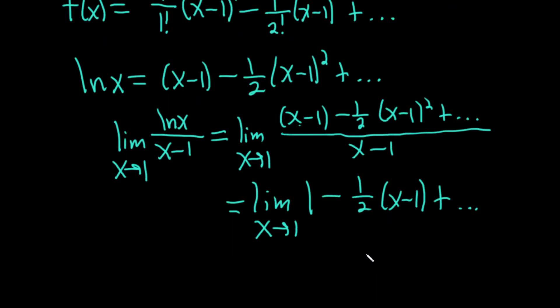So everything is going to be 0. You're just going to get 1. This is 1 minus 0, which is equal to 1.